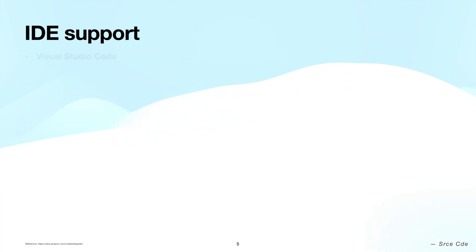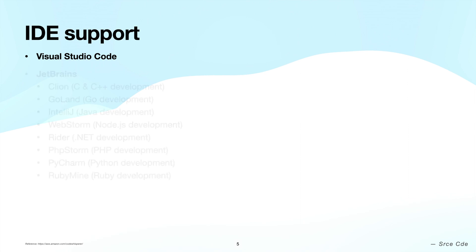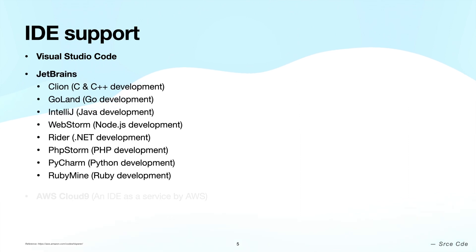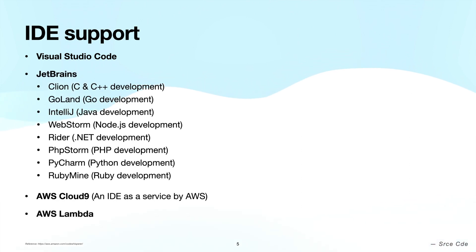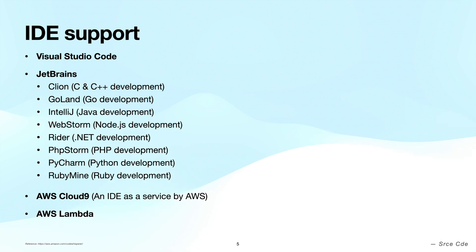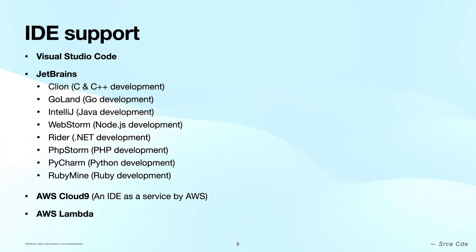CodeWhisperer is available as part of the AWS Toolkit for Visual Studio Code and the JetBrains family of IDEs. It is also available on AWS Cloud9, which is the IDE-as-a-service offered by AWS, and finally it is also available on the AWS Lambda console. Now we have a fair understanding of which programming languages and IDEs CodeWhisperer supports — let's understand how it suggests code.